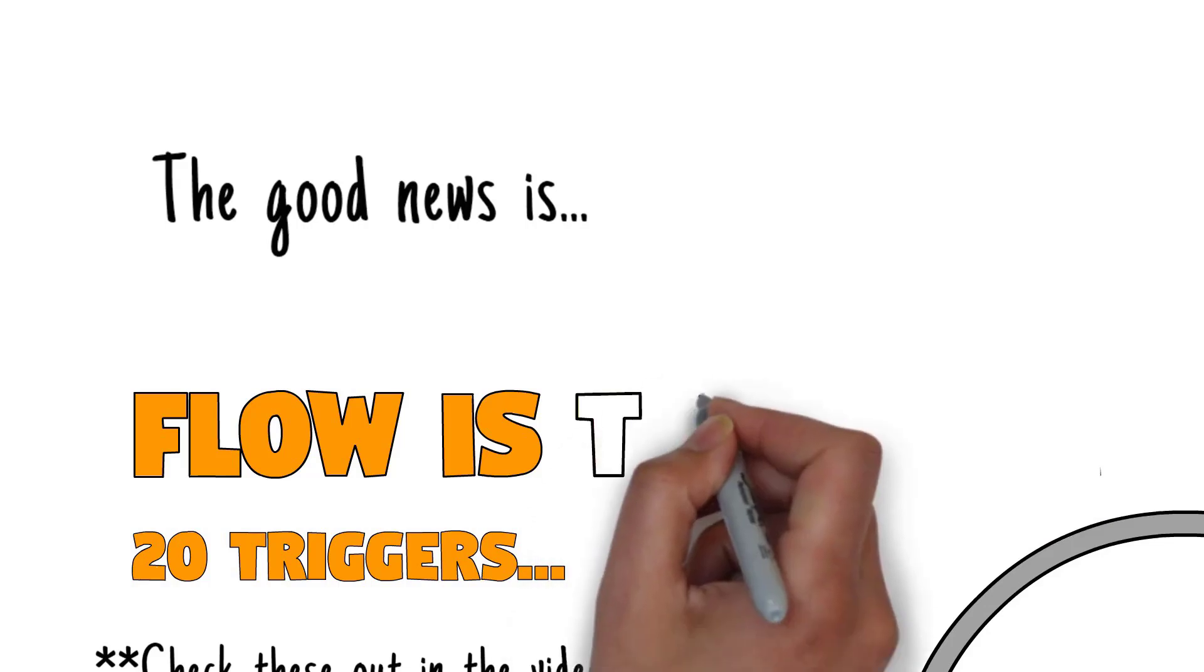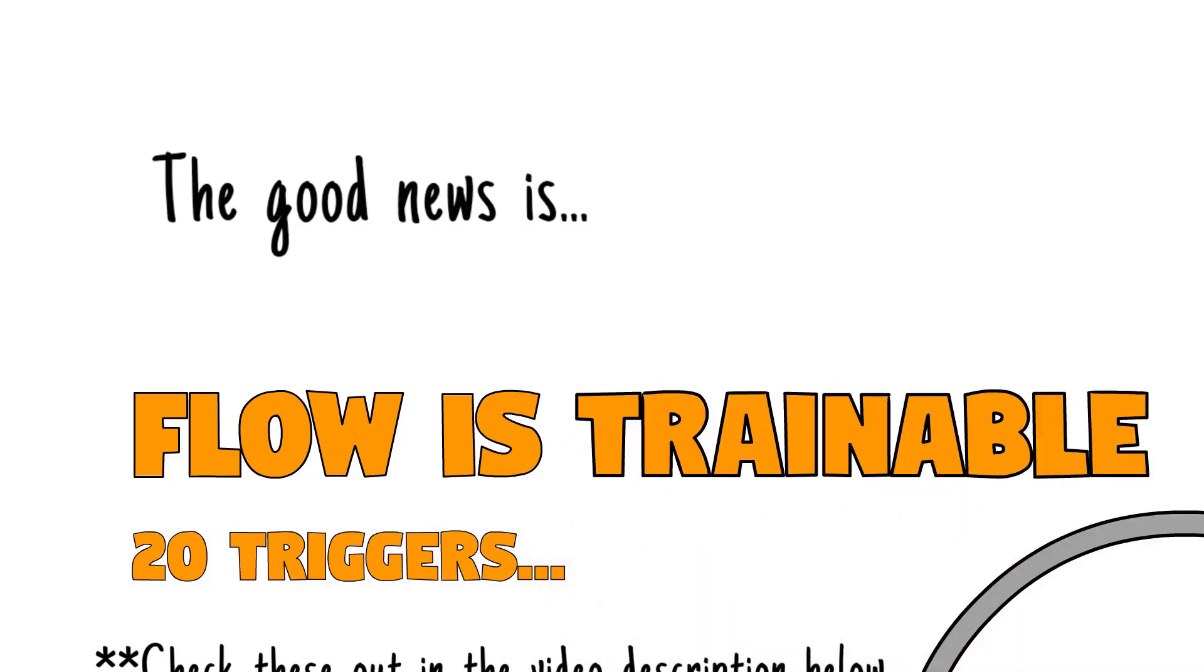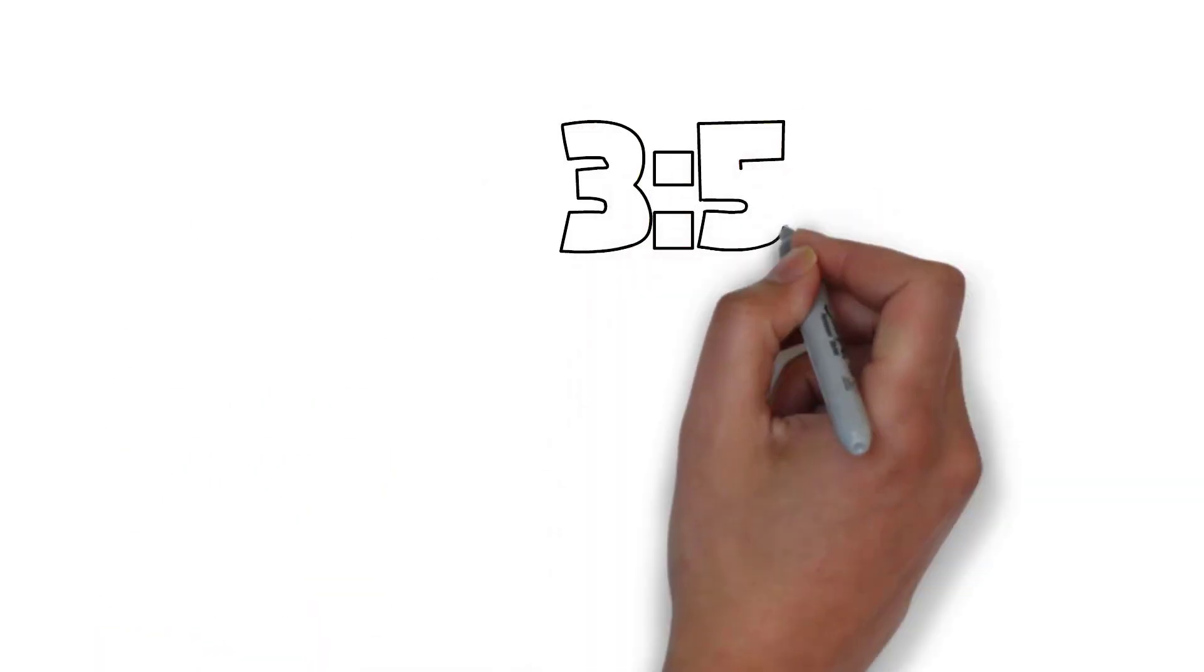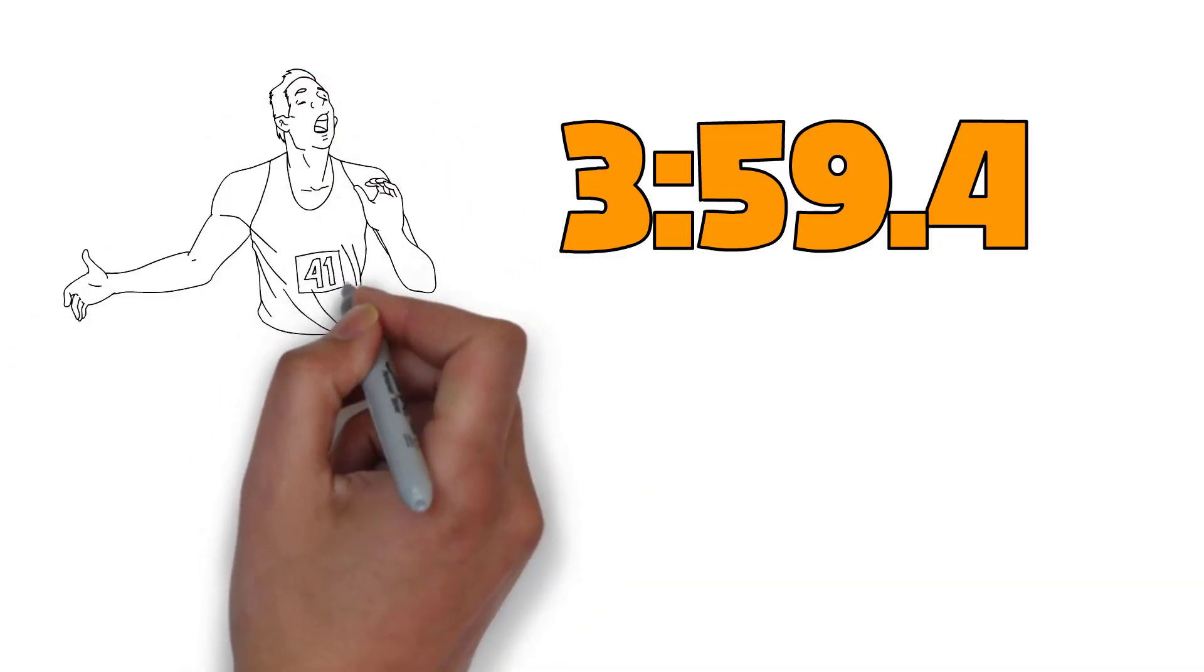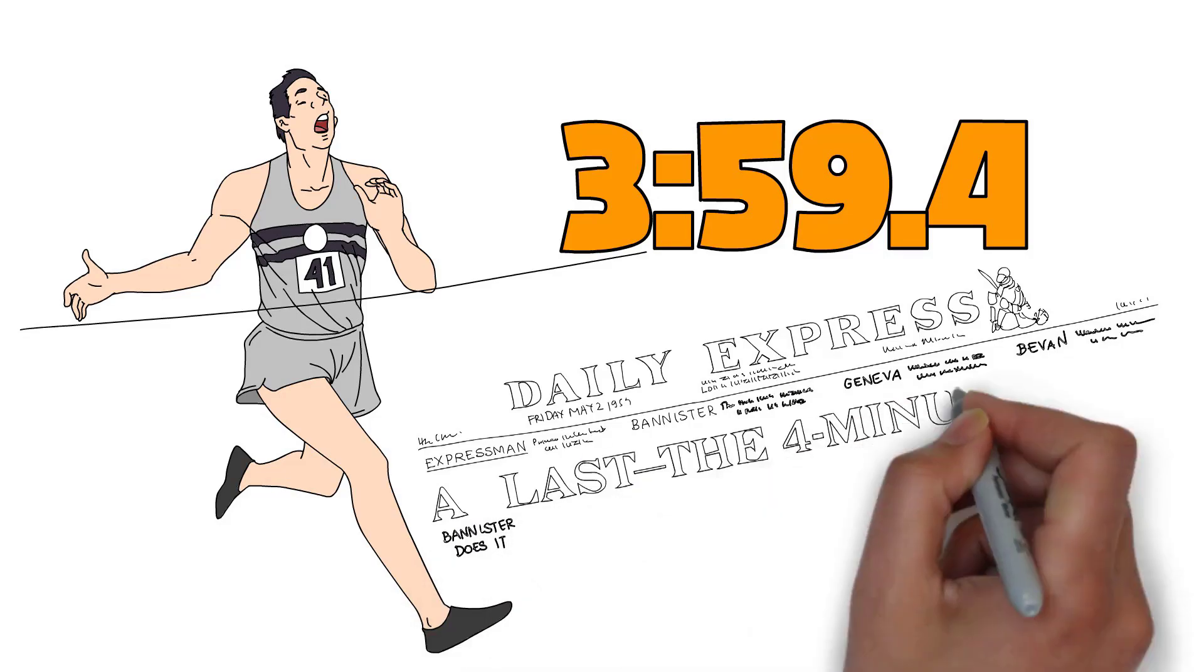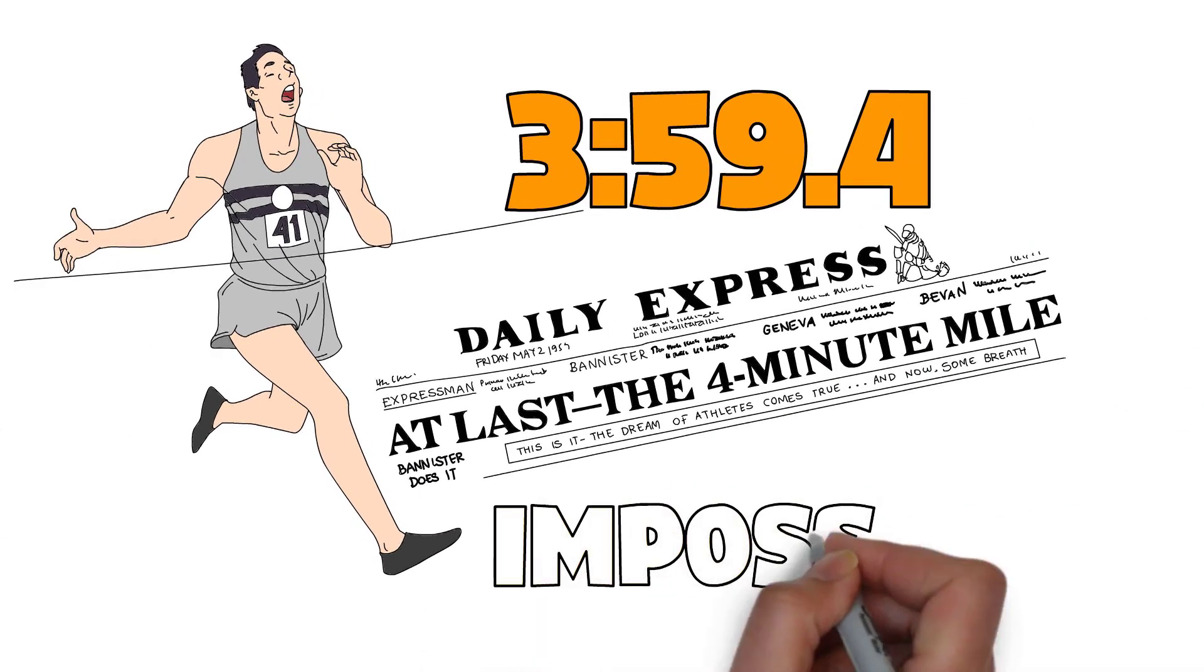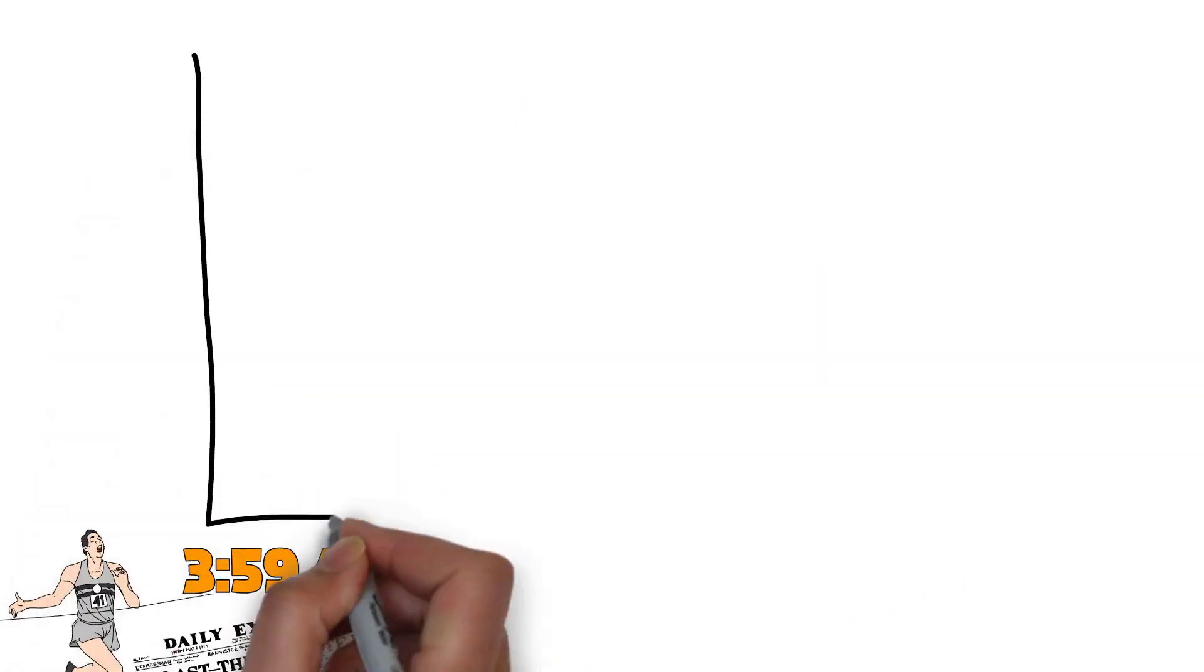I want to tell you why I think all this information matters so much, and to do that I have to explain this number: 3 minutes 59.4 seconds. That is the amount of time it took Roger Bannister to run the world's first four-minute mile. When he did this, it was an absolute impossible. People thought it was going to kill him. It also took forever to run this first four-minute mile.